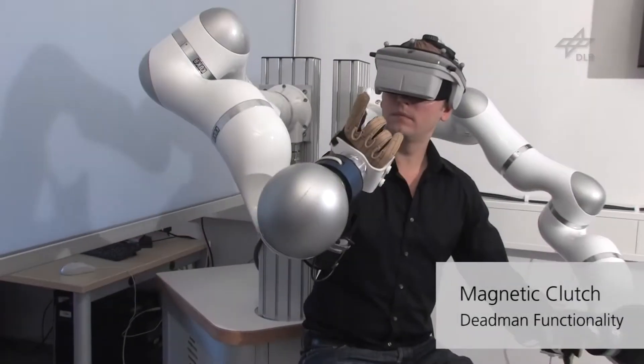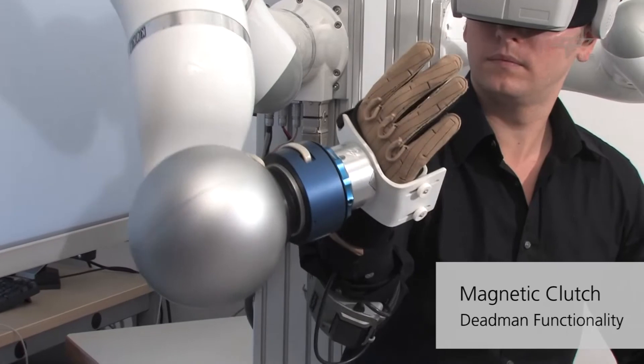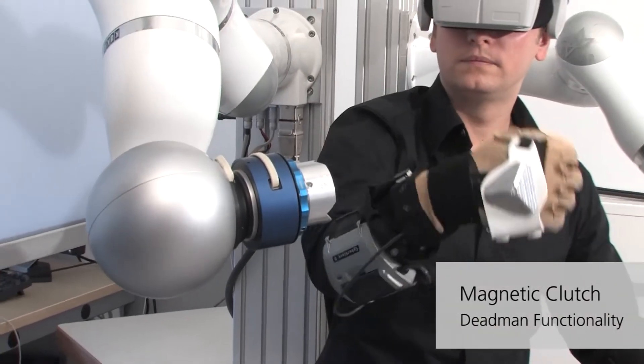The hand interfaces are magnetically attached to the robots. As soon as the magnetic clutch releases, the robots stop immediately.